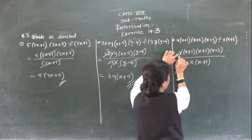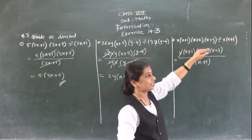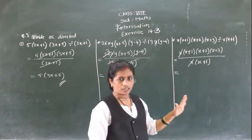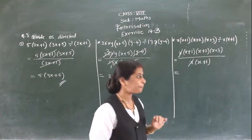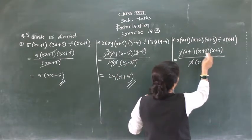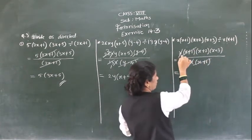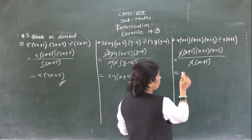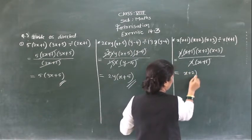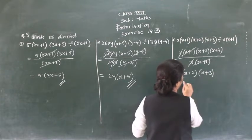Now we will check: (x+1)(x+2)(x+3) divided by x(x+1). The numerators are written in product form. And (x+1) is here in denominator, so this (x+1) will get cancelled. So finally you will get (x+2) divided by x(x+3).